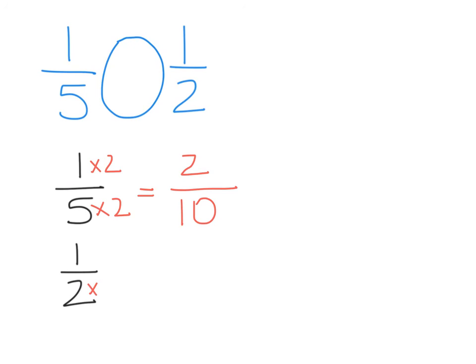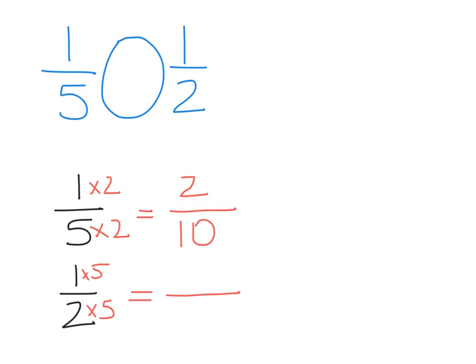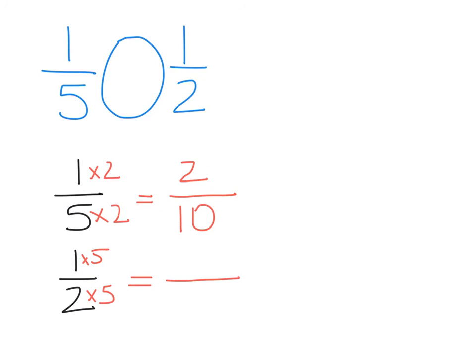I'm going to multiply this denominator by five because the denominator above is five. And that means I have to multiply the numerator by the same number. There's my equal sign and my new fraction bar. One times five is five, and two times five is ten.